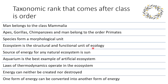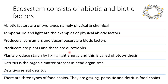Ecosystem is the structural and functional unit of ecology. Source of energy for any natural ecosystem is the Sun. Aquarium is the best example of artificial ecosystem. Laws of thermodynamics operate in the ecosystem. Energy can neither be created nor destroyed. One form of energy can be converted into another form of energy. Ecosystem consists of both abiotic and biotic factors.